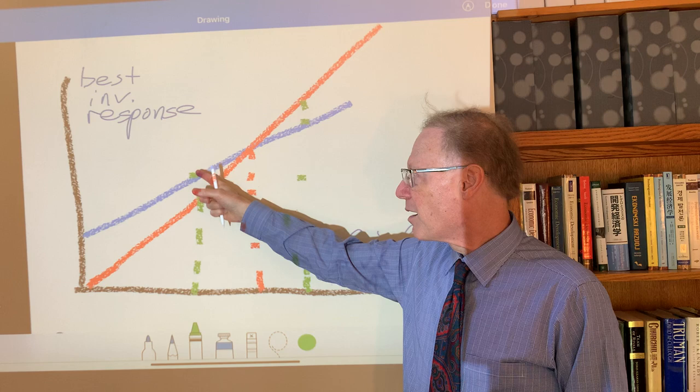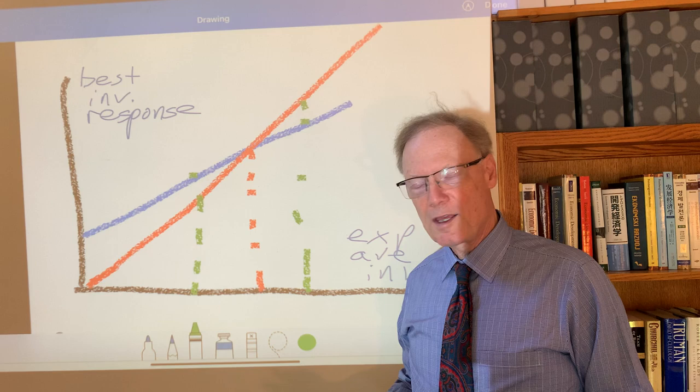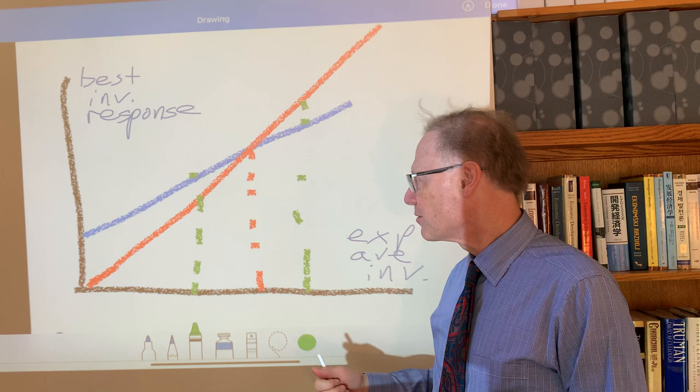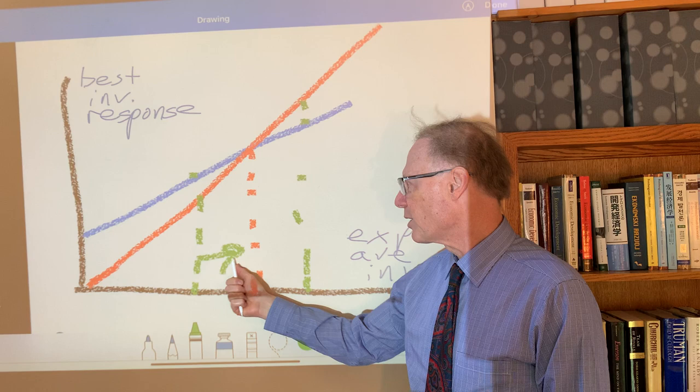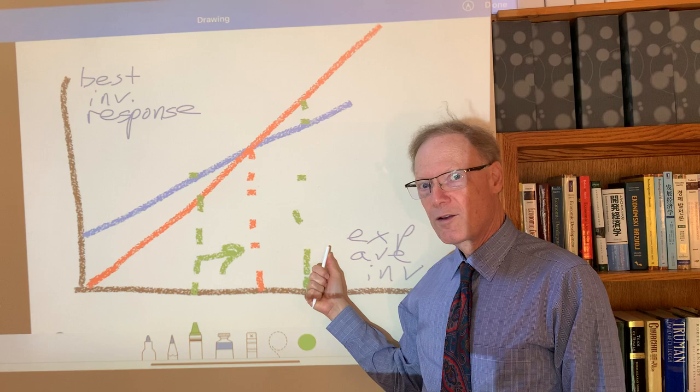So if each firm is responding to the average by choosing to invest more than that average, we clearly cannot be in an equilibrium because each firm is finding it optimal, that is to say profit maximizing, to invest more. So we have to be moving this way. And the same logic will bring us all the way up to this point.